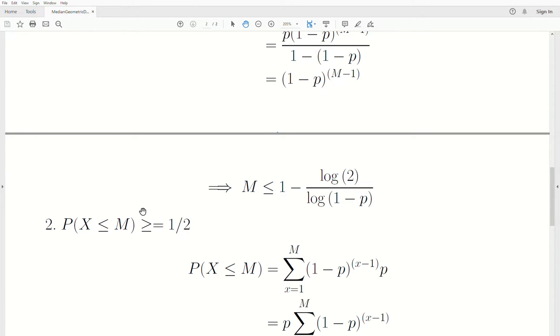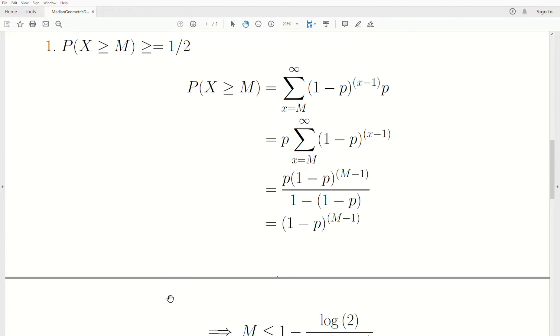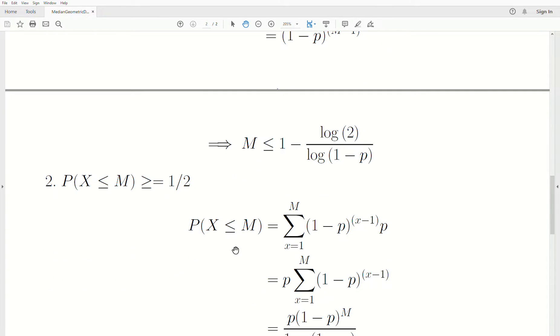So let's look at the second criteria, that X less than or equal to M is greater than or equal to one-half. The probability that X is less than or equal to M means we're summing from 1 to M of the geometric density.